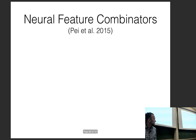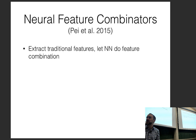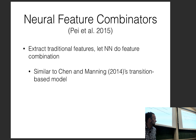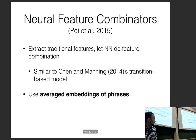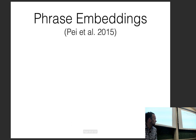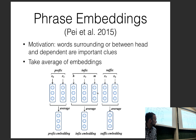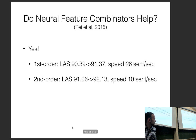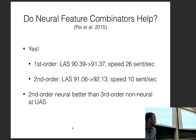For neural graph-based dependency parsing, early work used neural feature combiners similar to the Chen and Manning transition-based model, using average embeddings of phrases and second-order features. The state-of-the-art approach uses a neural feature extractor with a biaffine classifier. This model creates separate MLP representations for each word depending on whether it acts as a head or a dependent — different features matter in each role. For example, when a noun is a dependent, what verbs it associates with matters more; when it is a head, what adjectives apply matters more.